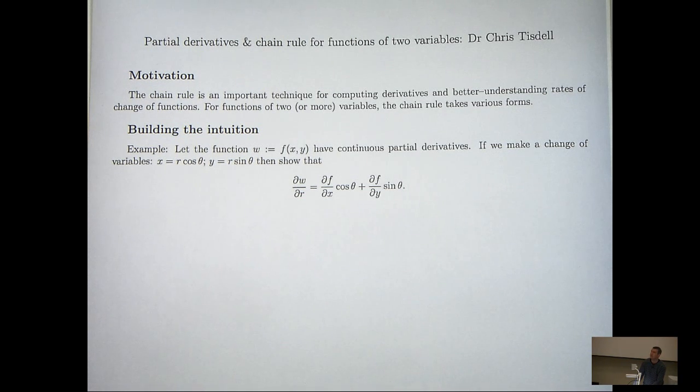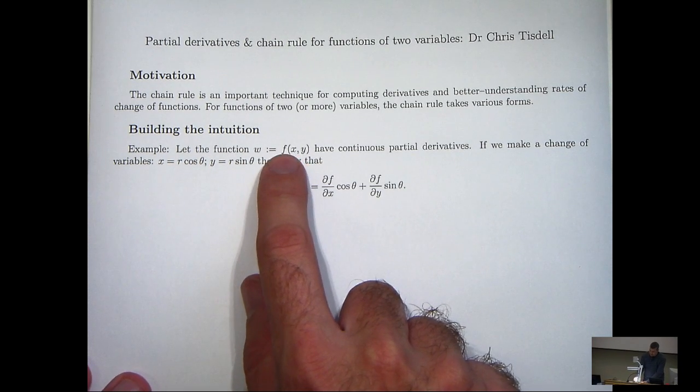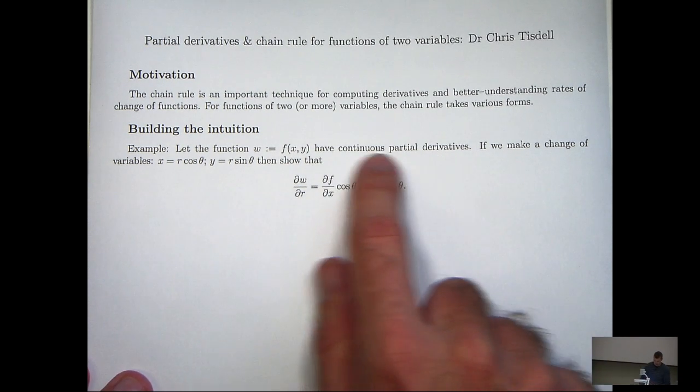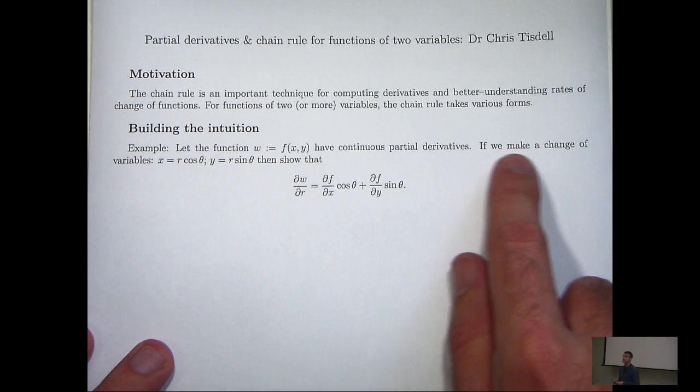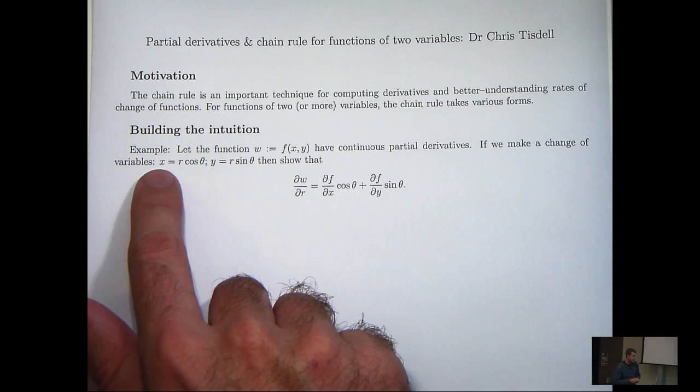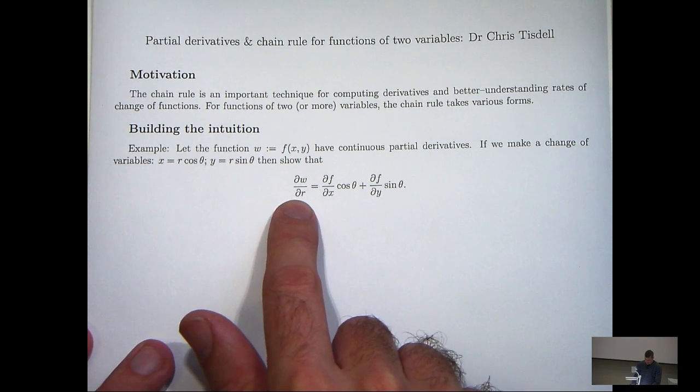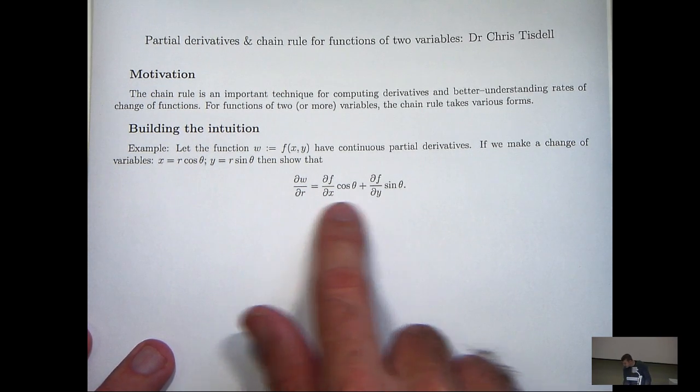So let's build our intuition. Let's actually formulate a chain rule and see how this all works. Consider the following function where the function has continuous partial derivatives. You may think, why do we make this assumption here? Well, that's one of the assumptions to ensure that the chain rule works. If we make a change of variables, x equals r cos theta and y equals r sin theta, then show that the partial derivative dw/dr satisfies this expression.